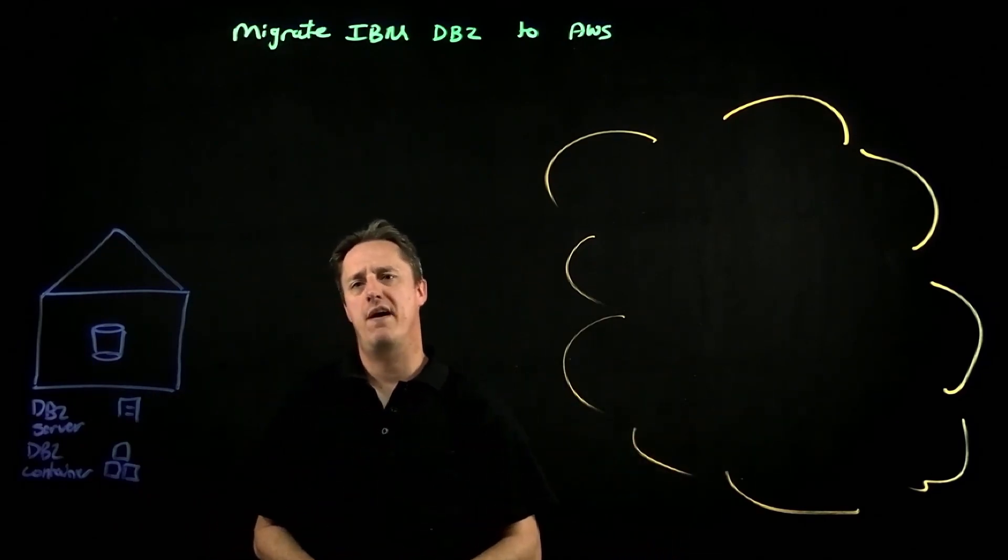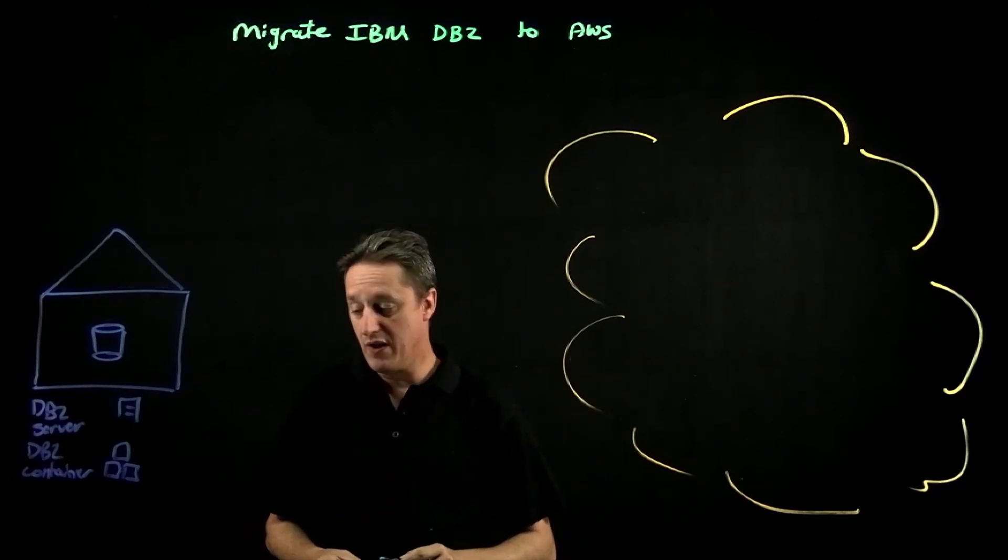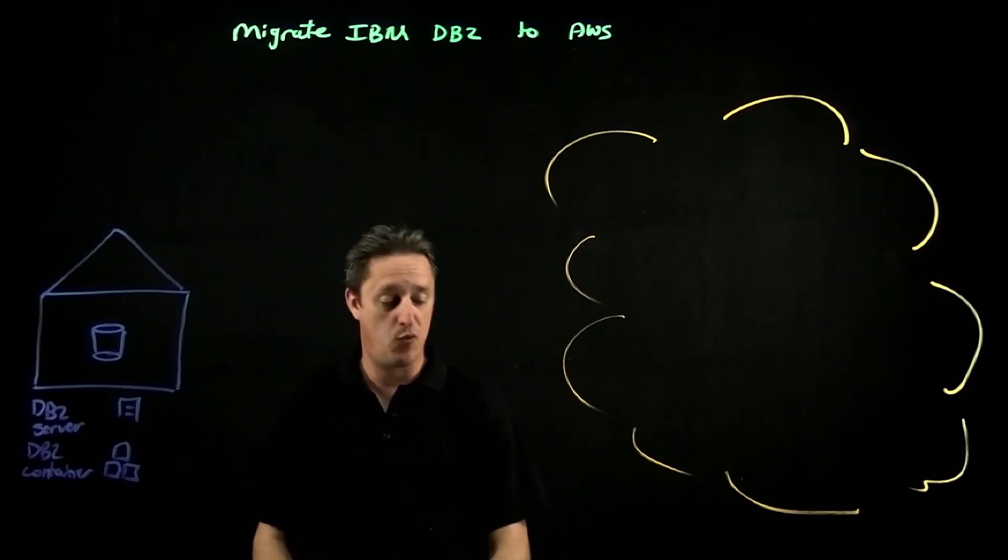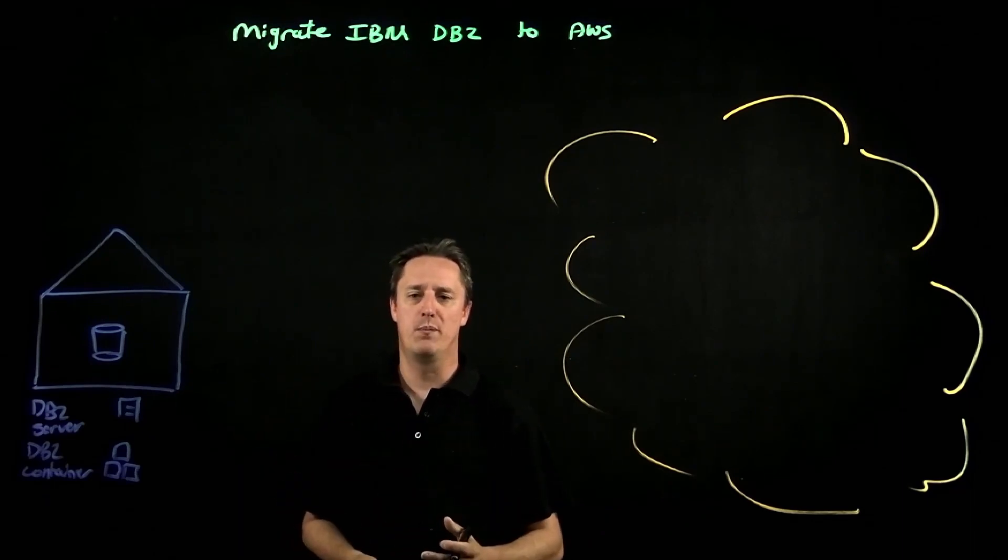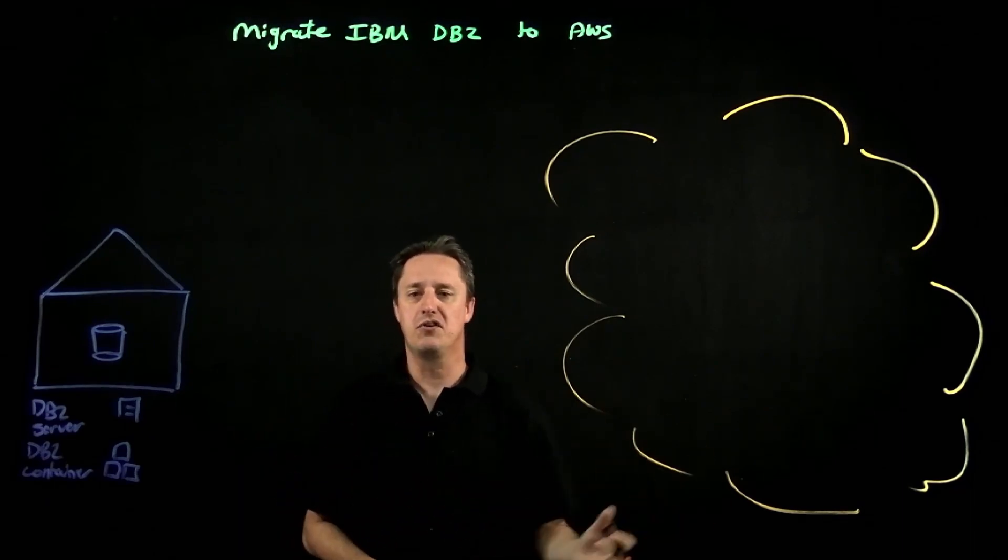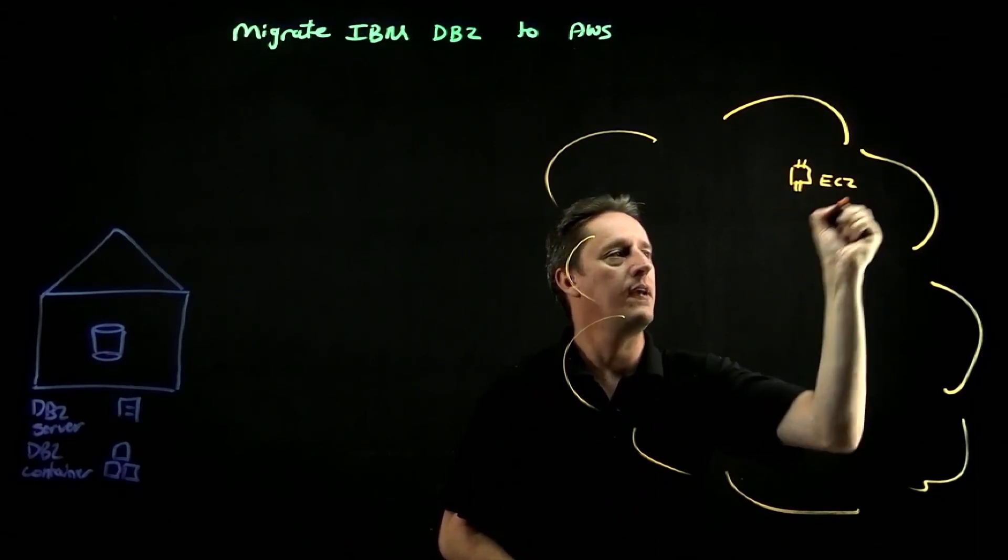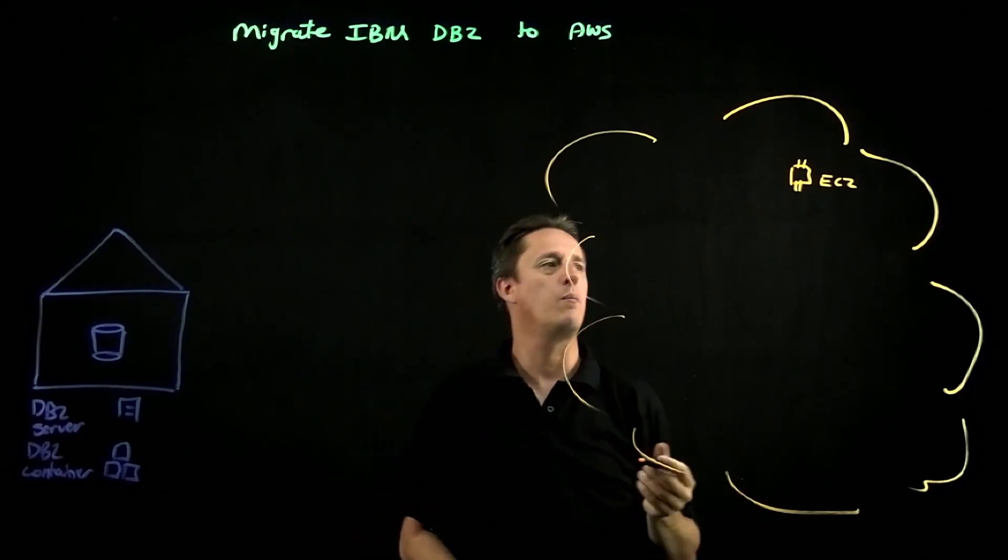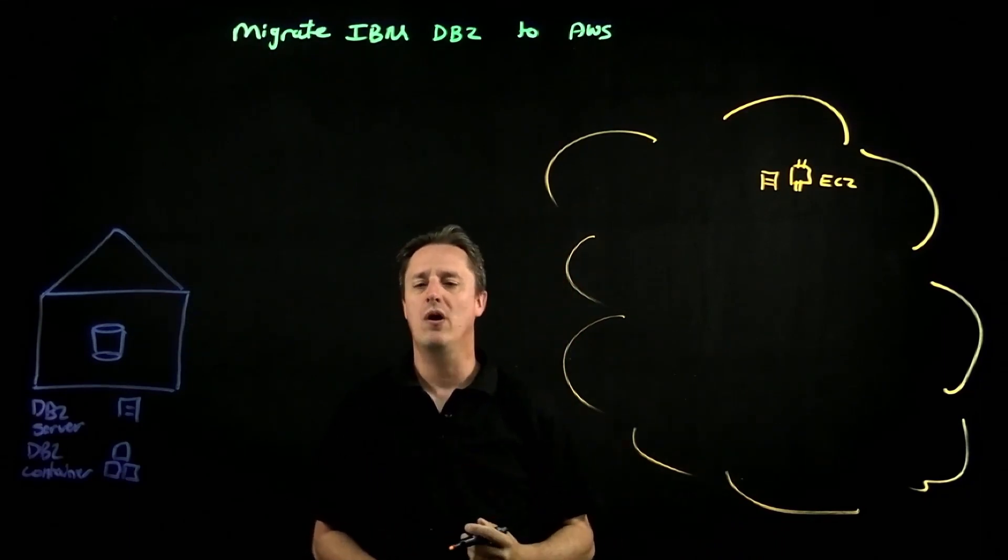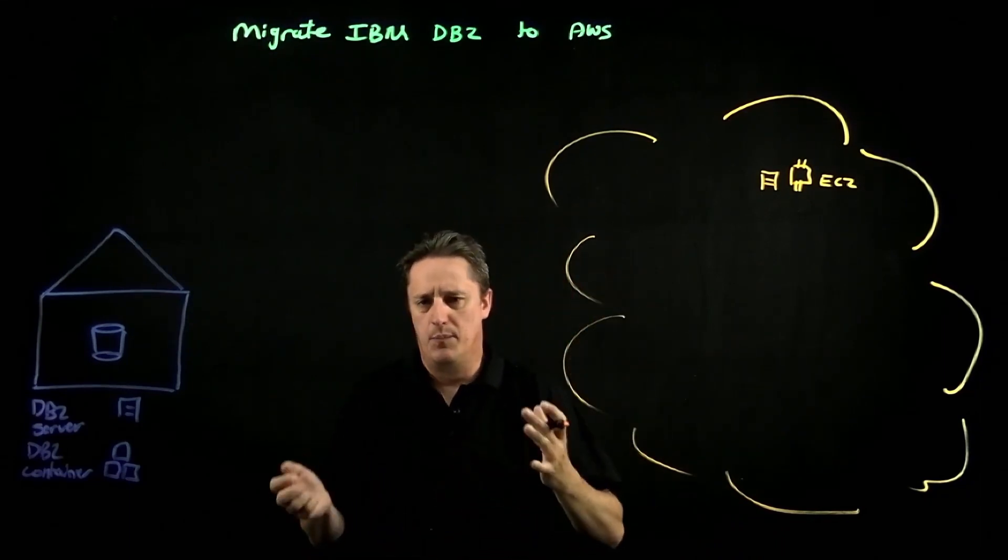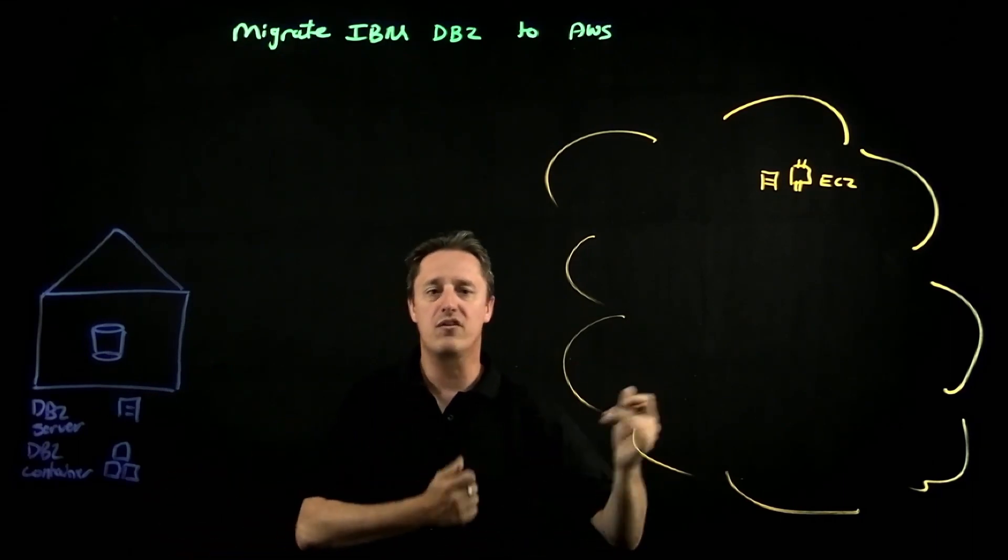One of the things that we found that can speed things up is first identifying what is the target. Now for customers moving to AWS, they have quite a few options. They could take that server-based DB2 implementation and simply do a lift and shift to AWS. So literally, this could be EC2 instances on AWS and we could be lifting and shifting the server-based version of DB2 and that could be a procurement of a new subscription through AWS Marketplace or a bring your own existing license to AWS.